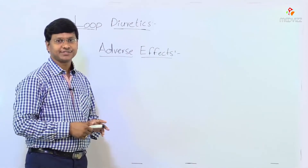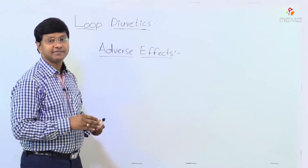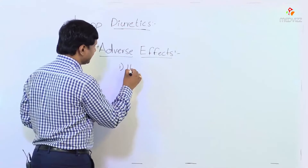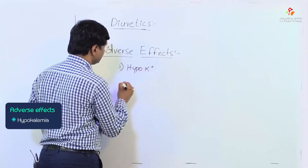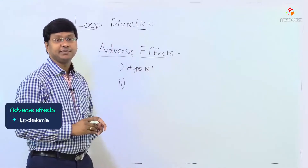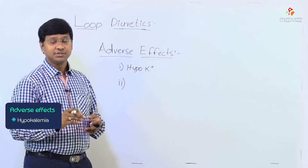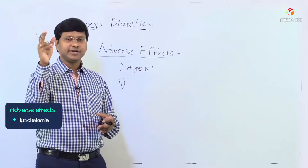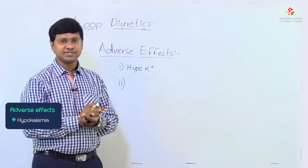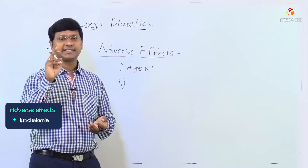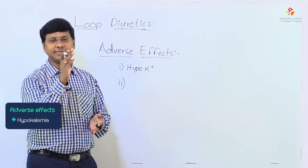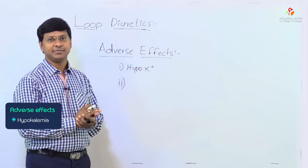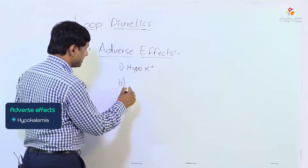Now let me discuss the adverse effects of loop diuretics. The first and foremost adverse effect is electrolyte disturbance. These individuals will have hypokalemia. This is because sodium not reabsorbed at the thick ascending limb of the loop of Henle reaches the distal tubules, where it gets exchanged with potassium, causing potassium to be excreted in the urine — resulting in hypokalemia.